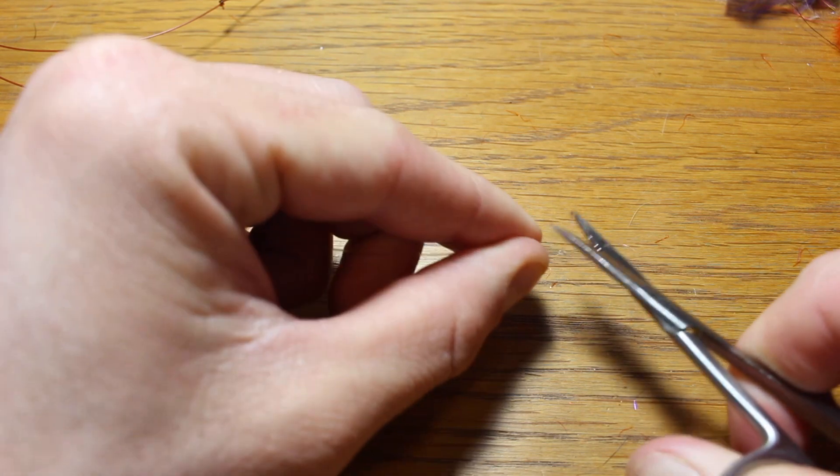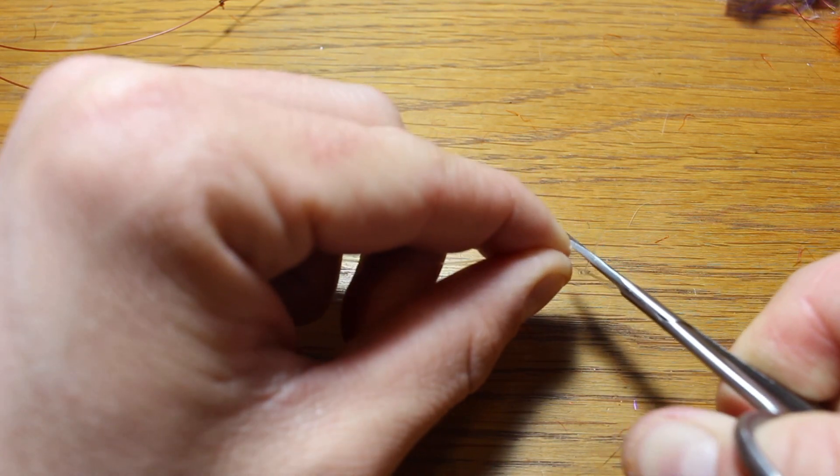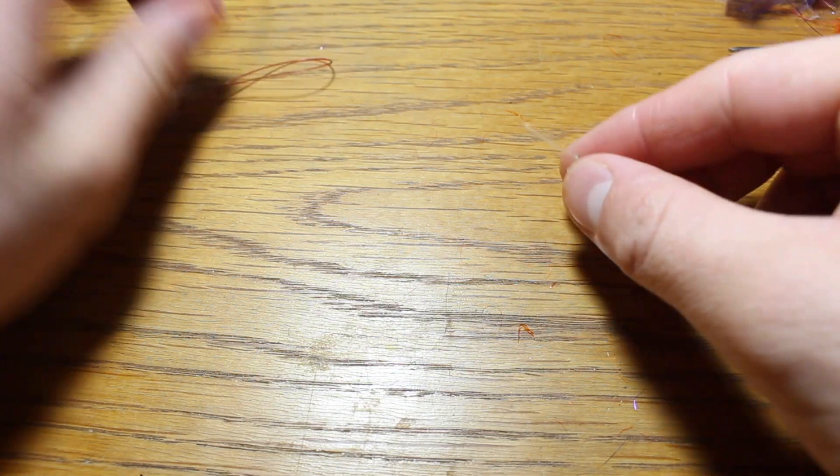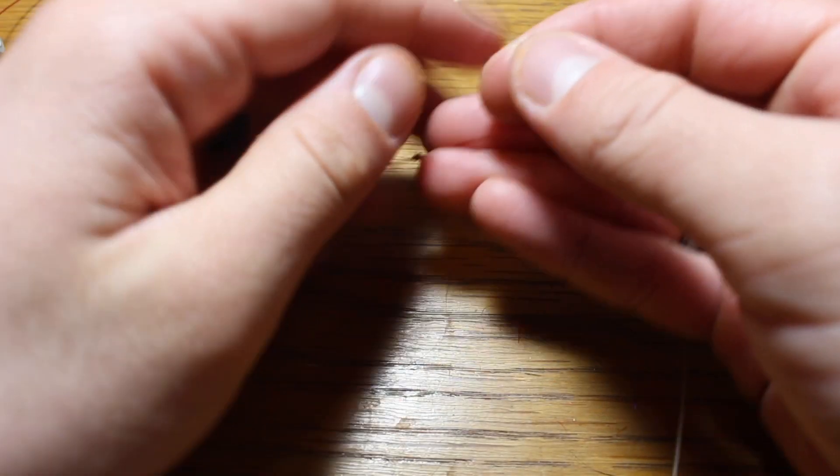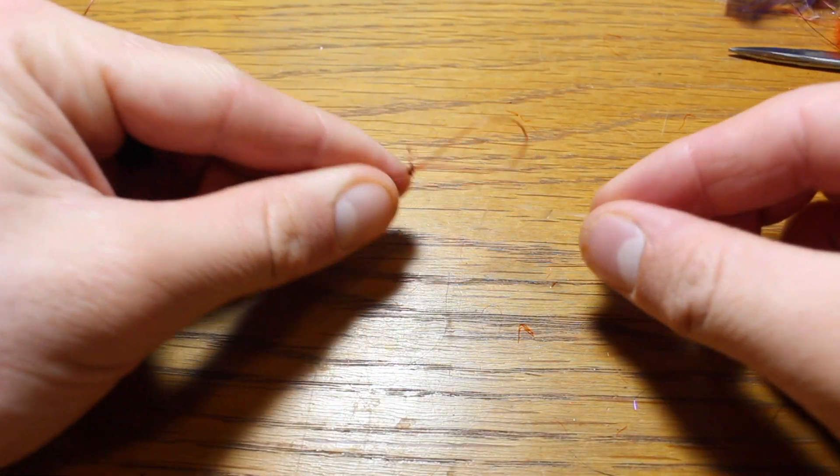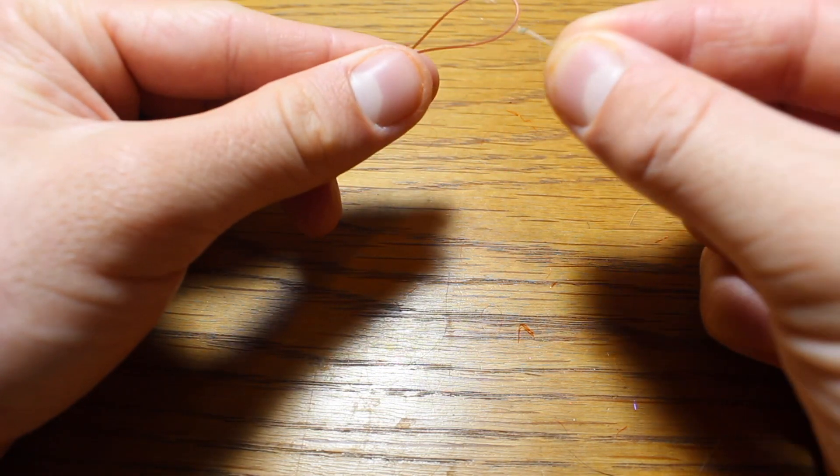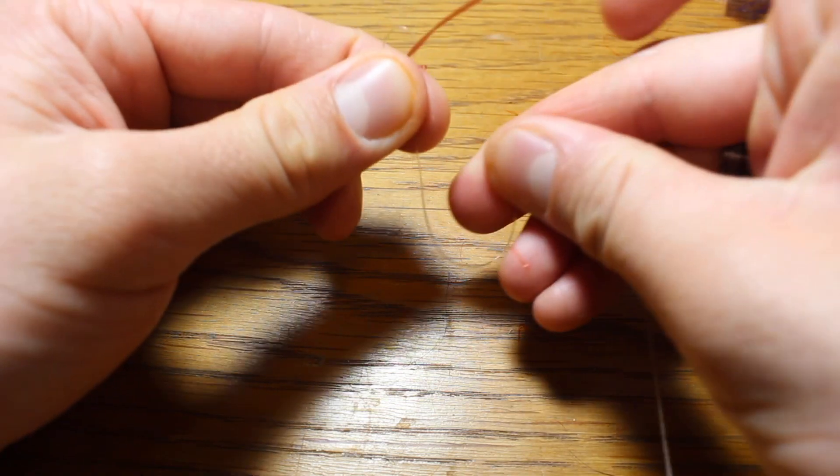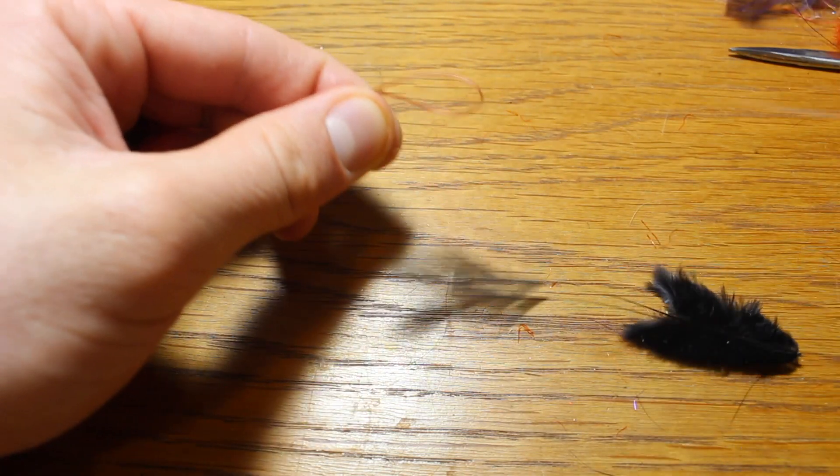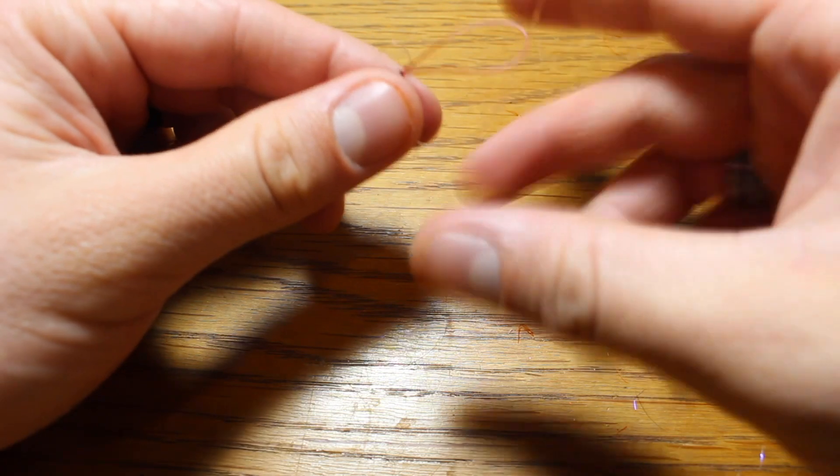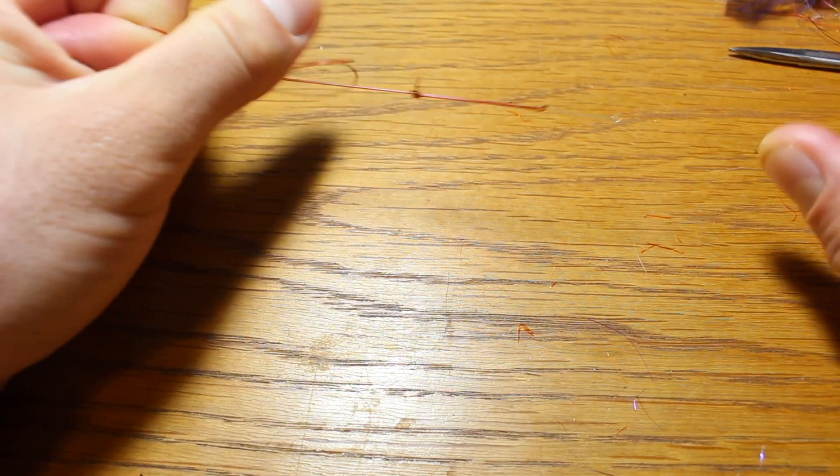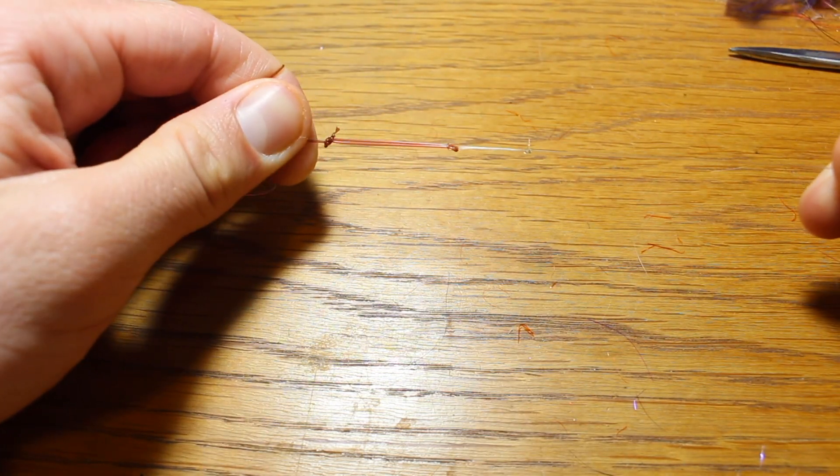So I get that loop to loop connection. Now, just for the sake of the video, I'm not wetting these knots in between, but normally I'd be wetting these knots before I pulled them tight so that it would help to stop any line burn that could possibly happen. So I'm going to loop to loop these together. Put over one loop, pull it through. I'm going to pull her tight. I've got that loop to loop connection now.